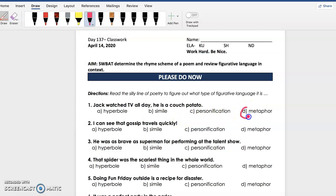Next, number two: I can see that gossip travels quickly. Of course we know that gossip can't travel. They're basically saying that it's spreading around, but it's giving it a human quality. So if you chose C, personification, you were right.